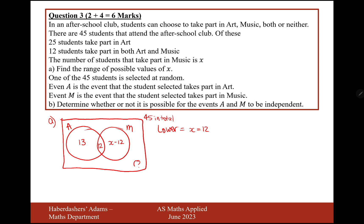And for the upper bound, let's assume that no one takes neither of the two clubs. So we need our data in this section here to add up to 45.